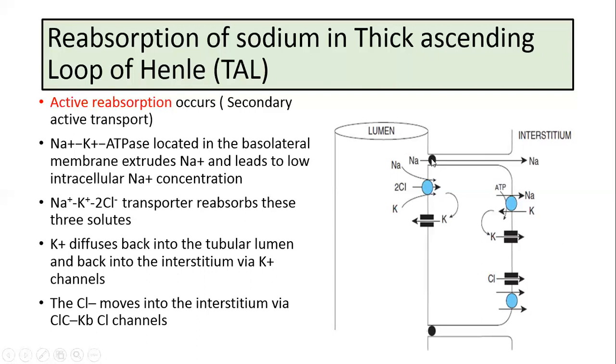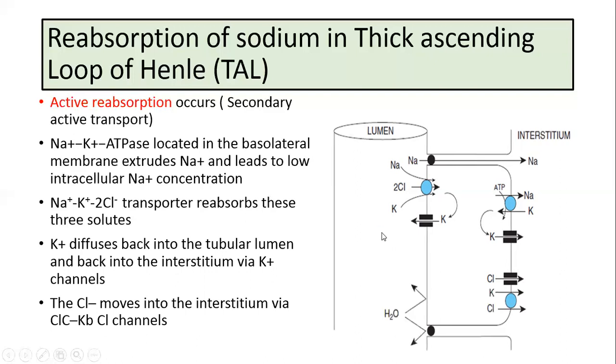Some of the sodium moves paracellularly due to the lumen positive potential caused by the potassium leak into the lumen. This limb of the loop of Henle is impermeable to water.